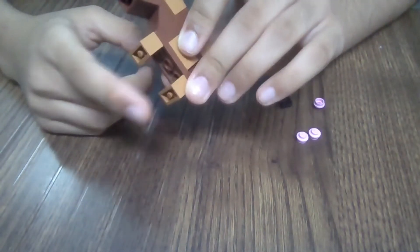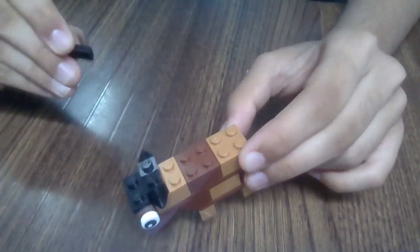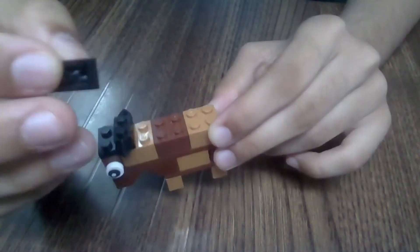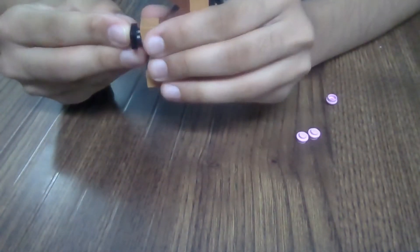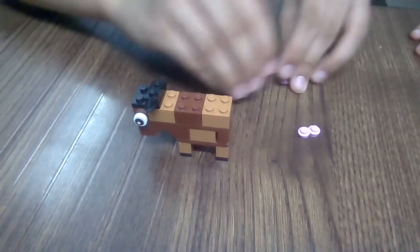And below the feet of the goat we'll have some hooves. So for that we need these two black pieces. Put that there, and on the second leg a spot.